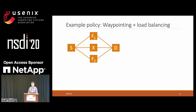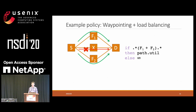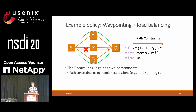To see a concrete example of what Contra can support, let's consider this network topology where we have two goals in the policy: one is waypointing, the other is load balancing. For waypointing, we may want to restrict traffic to be forwarded along a path with F1 or a path with F2, but not any other path. And in the meantime, we also want to do load balancing between these two feasible paths. To do this in Contra, we can simply write down three lines of policies.